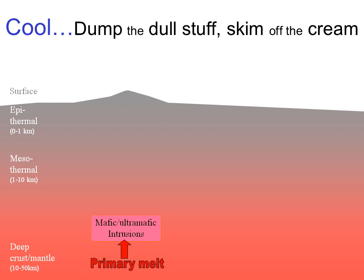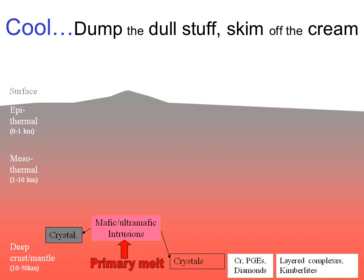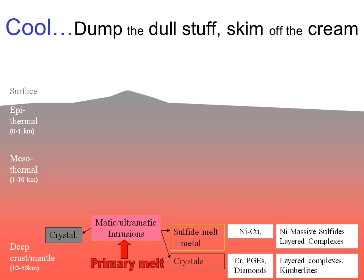Usually some of the first to form — and the first to crystallize at the greatest depths — are the mafic and ultramafic intrusions. As they start to cool they crystallize out minerals such as pyroxenes, olivines, and maybe even some feldspars, but those contain nothing of worth. The metals we do want are concentrated either in later-formed crystals — for example chromium, platinum, and diamonds forming in layered complexes and kimberlites respectively — or they combine with sulfur to form a sulfide melt. Copper and nickel are two metals that tend to do this, so we find nickel massive sulfide deposits and copper-nickel deposits in layered complexes.